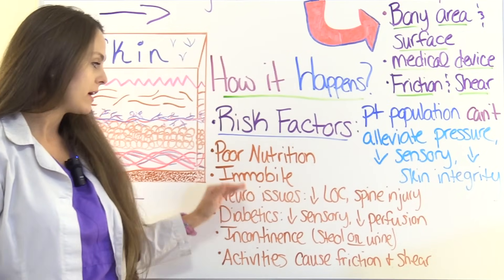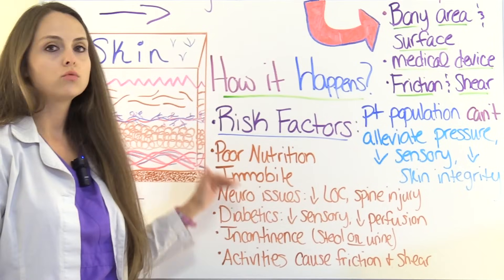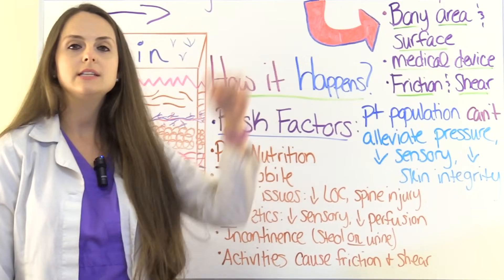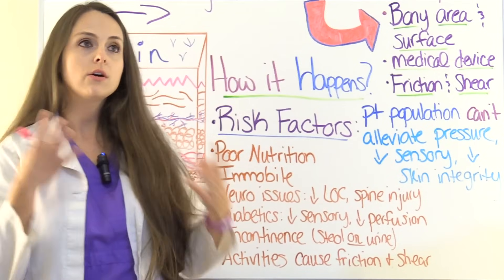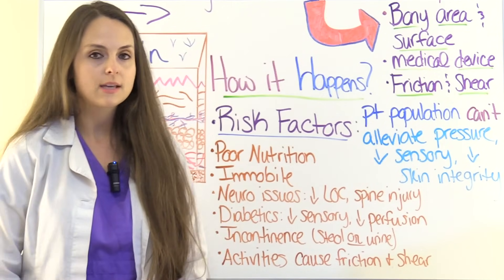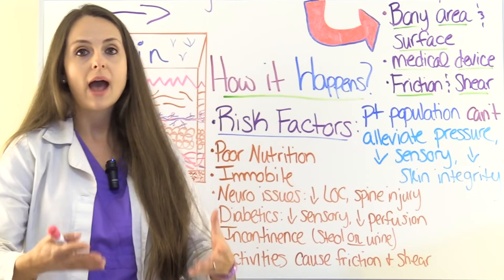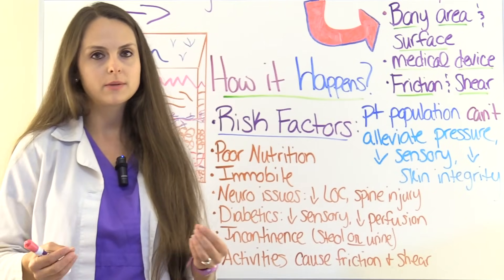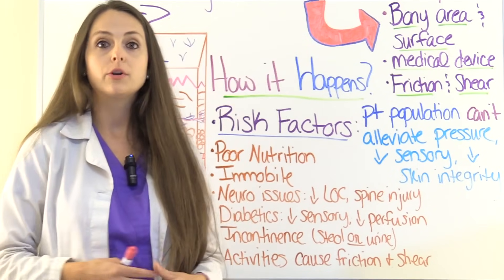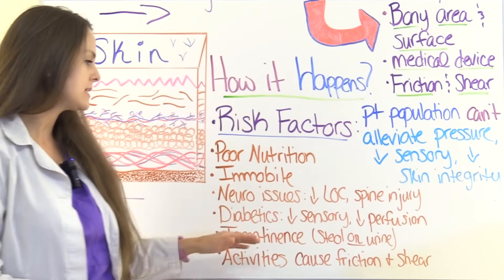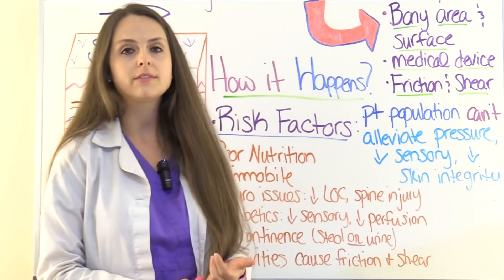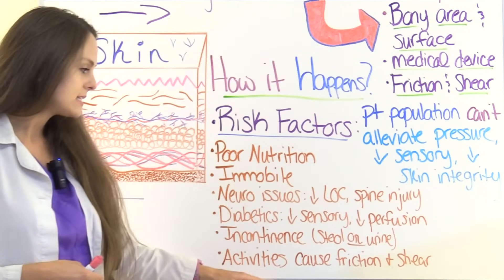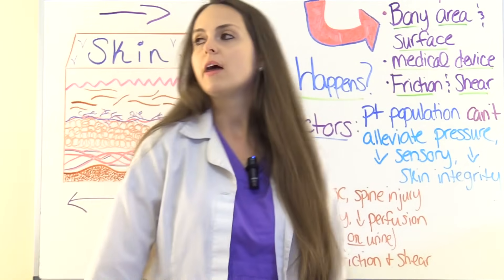Diabetics are at risk, especially if they're immobile, have neuro issues, or have poor nutrition — making them a huge candidate for a pressure ulcer. Diabetics have decreased sensory perception, so they may not know they've injured their foot. They also have decreased perfusion, meaning their epidermis and dermis won't be as well-perfused as someone without diabetes. A patient who is incontinent — of stool or urine — if that sits on the skin for a long time, it increases the risk of a pressure injury, as do activities that cause friction and shear.